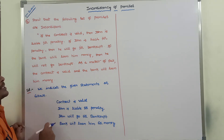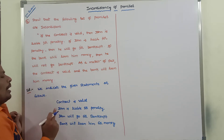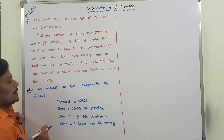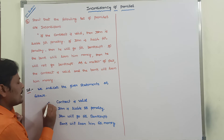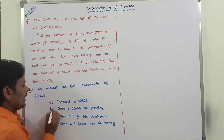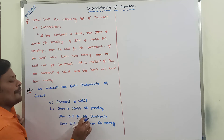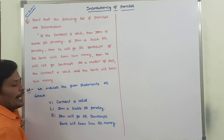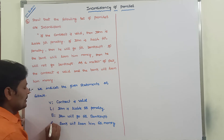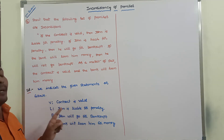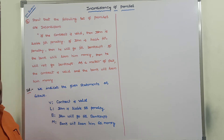These are the unique statements from the given problem. These unique statements are represented by using uppercase letters. Contract is valid can be denoted by the letter V. John is liable for penalty can be denoted by L. John will go for bankrupt can be denoted by B. Bank will loan him money can be denoted by M.